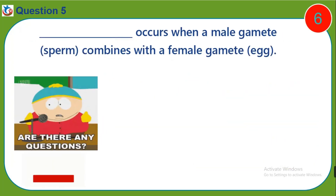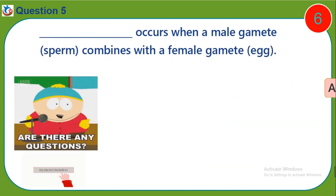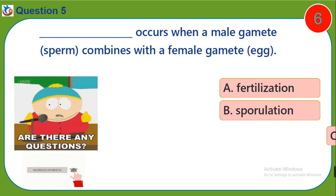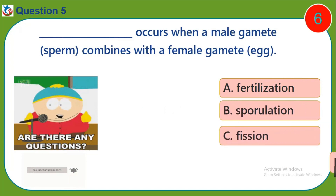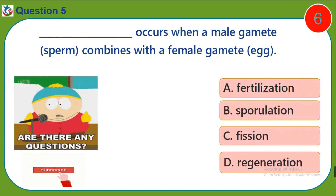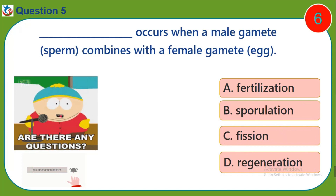Question five: What occurs when a male gamete combines with a female gamete? a) fertilization, b) sporulation, c) fission, d) regeneration.